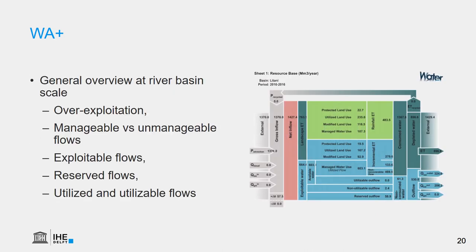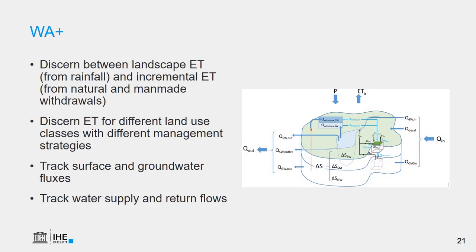The outputs of Water Accounting Plus provide a general overview at river basin scale of overexploitation, manageable versus unmanageable flows, exploitable flows, reserved flows, and utilized and utilizable flows. Water Accounting Plus discerns between landscape evapotranspiration from rainfall and incremental evapotranspiration from natural and man-made withdrawals. It also distinguishes evapotranspiration for different land-use classes with different management strategies, and tracks surface and groundwater flows as well as water supply and return flows.